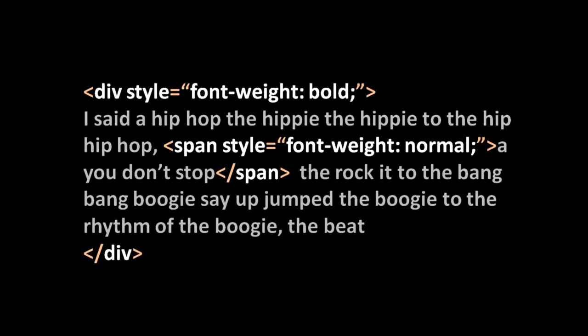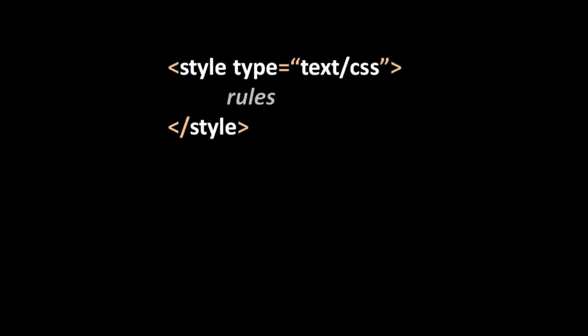Directly applying styles with the style attribute is one way to do it, but it's actually the most frowned-upon way — it's considered bad practice. Alternatively, the much better thing to do is to apply styles to elements using what are called rules, and these rules you write inside a style tag which you place in the header of your document. The style tag should have a type attribute with the value "text/css" — most browsers will work fine if you omit it, but it's good practice to include it.